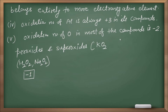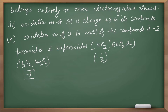Superoxides are generally formed by alkali metals — like KO2, RbO2 — in which the oxidation number of oxygen is minus one-half. There is also a rare case where oxygen shows a positive oxidation state, only when bonded with fluorine. OF2 gives oxygen an oxidation number of plus two, and O2F2 gives plus one.